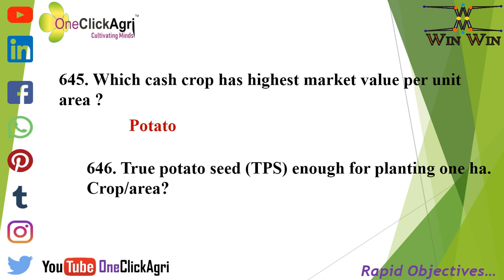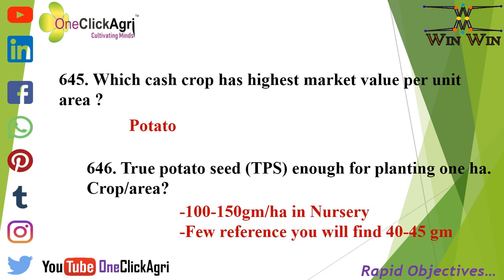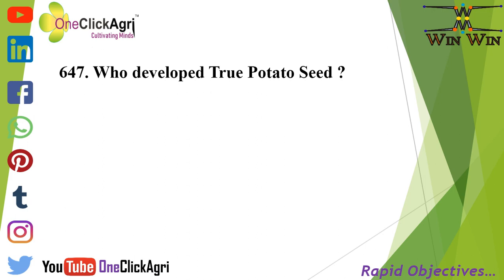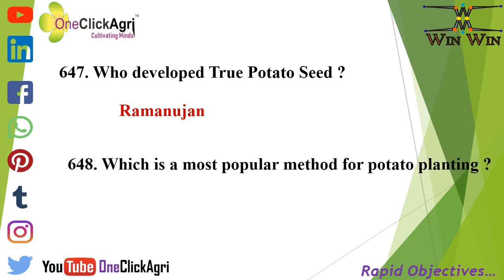True potato seed (TPS) required for planting 1 hectare is 100 to 150 grams per hectare in nursery; some references cite 40 to 45 grams. True potato seed was developed by Ramanunjan. The most popular method for potato planting is the ridge and furrow method.